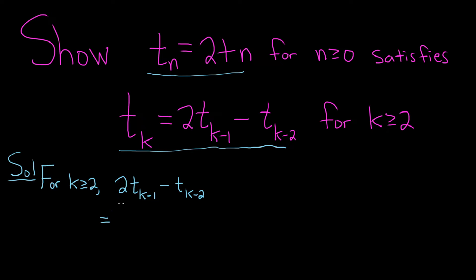So this is equal to, let's see, 2. So t sub k minus 1 is the same thing as t sub n, except we replace all of the n's with k minus 1's. So this is 2 plus parentheses k minus 1. I just put the parentheses there for added clarity.